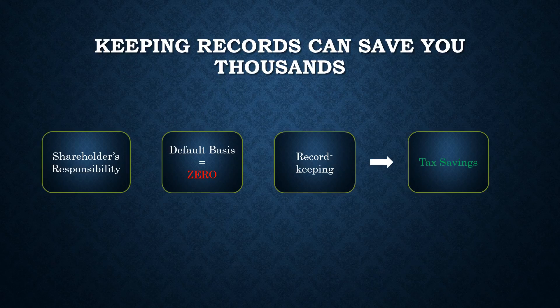It's the shareholder's individual responsibility to keep track of their stock BASIS. The IRS treats your stock BASIS by default as zero. Any higher BASIS number must be supported by documentation under audit. Good record keeping, therefore, can produce huge tax savings for shareholders and is well worth any additional documentation cost.